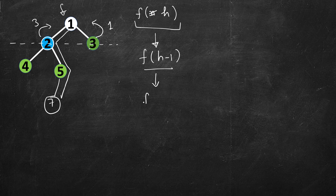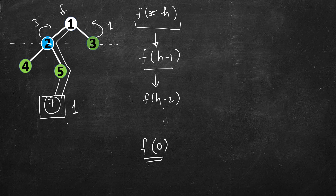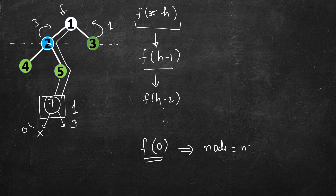Now f(h-1) will depend on f(h-2) and all the way up to f(0). What should f(0) be? For a leaf node like 7, the height will be 1. If it goes to one of its children, the left child will say depth is 0 because it's null, and similarly for the right child. So the base case is: if the node is null, return 0.